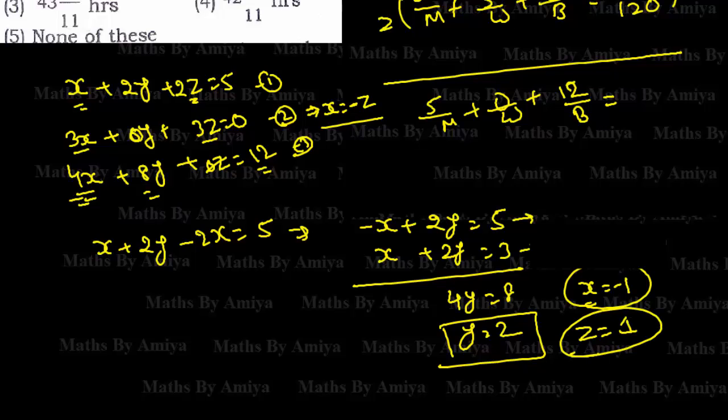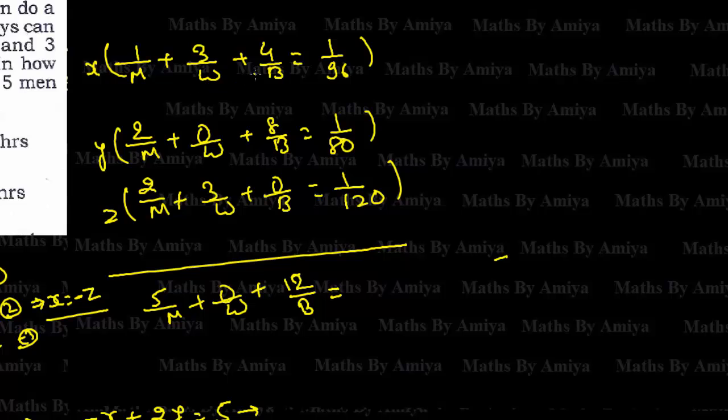We have three variables. Now, solve our question. This is our main equation. We have to find time. That is nothing but time is what? x upon 96 from here, y upon 80 from here, z upon 120 here. Time is the reverse.